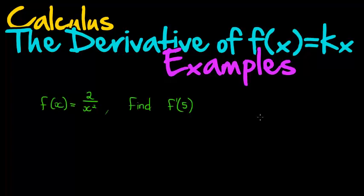In this example, we are given a function f(x) equals 2 over x to the power of 2, and we are told to find the derivative at the point 5. That's how I read this - the derivative at the point 5.